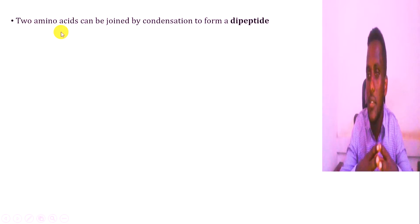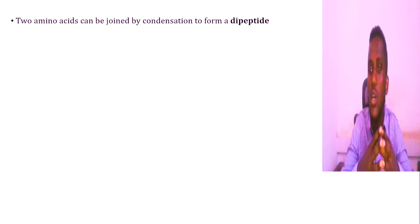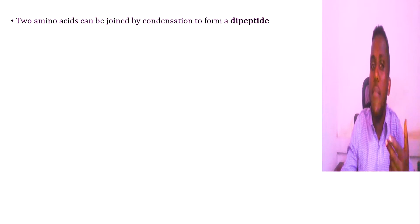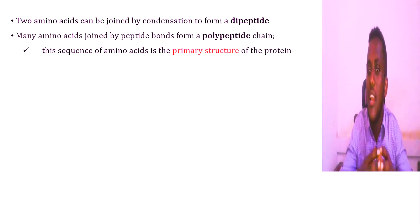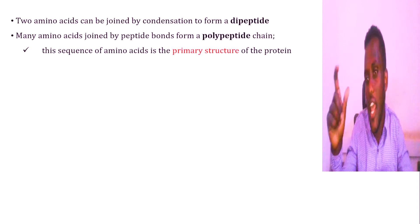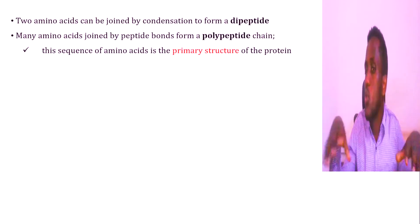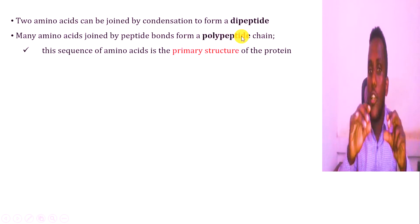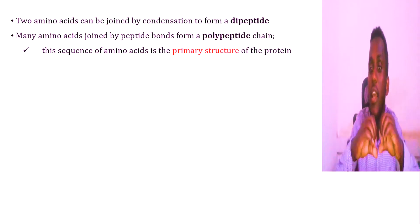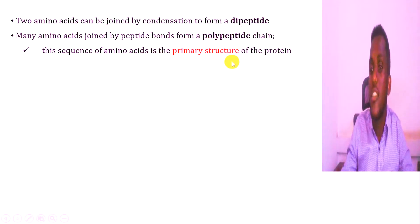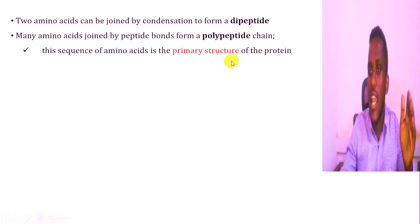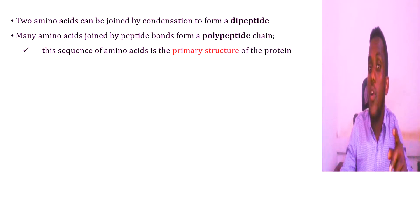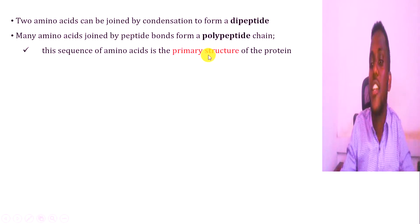When two amino acids are joined together, they can form a dipeptide. Many amino acids joined together form a polypeptide. Looking at the polypeptide chain, amino acids are joined sequentially by peptide bonds. This polypeptide chain, when you list the amino acid sequence, gives you the primary structure of the protein.